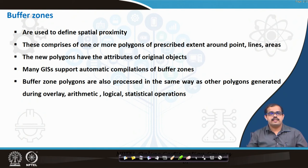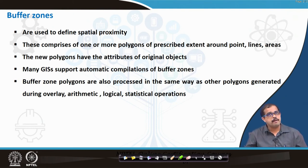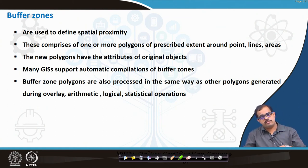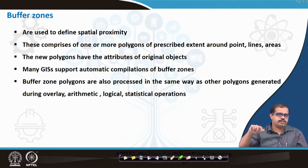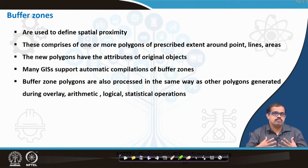Buffer zones comprise one or more polygons of prescribed extent around a point, line, or area, depending on the application. Most softwares today have a tool for creating buffer zones. Buffer can be based on the way that particular phenomena changes — for example, a road that is changing its course — or you can draw a uniform circular buffer. It depends on the user what kind of buffer is needed.